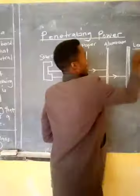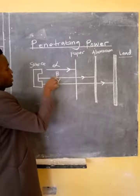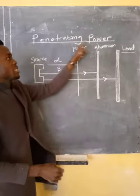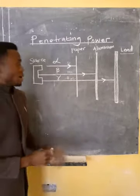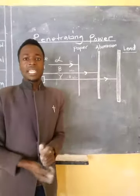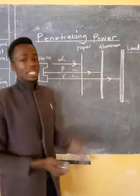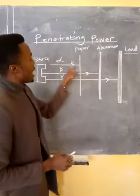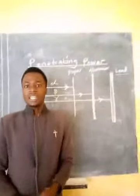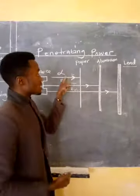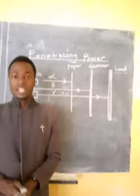This shows that if you are trying to shield a radioactive substance, the best material to use is lead, as gamma cannot penetrate it. Comparing the three: alpha has the lowest penetrating power, beta has medium penetrating power, and gamma has the highest. The one with the lowest penetrating power has the highest ionization power — alpha has the highest ionization power. Gamma has the lowest ionization power but the highest penetrating power.